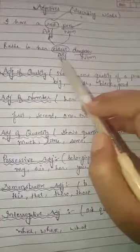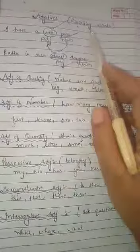These are the words which tell the quality of noun, which tell about the number of noun, whatever. For example, Radha is a eldest daughter. Daughter is noun. Which daughter? Eldest daughter. Eldest is adjective. So these are describing words.